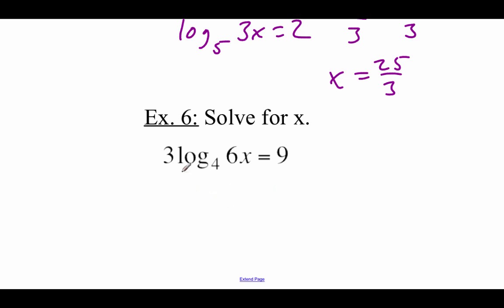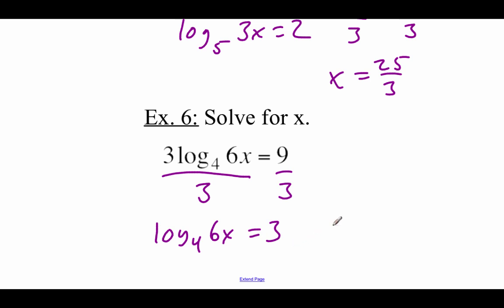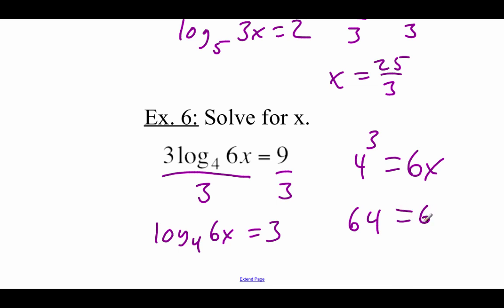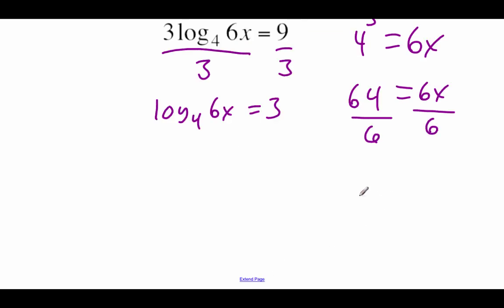Doing similar things with this one — divide the 3 over to the right-hand side. So we get log base 4 of 6x equals 3. Rewriting this one as an exponential, we've got 4 to the third power equals 6x. 4 to the third power is 64, so 64 equals 6x. And then if we divide both sides by 6, we can reduce this fraction — both are divisible by 2, so we'd end up with 32 over 3 equals our x value.